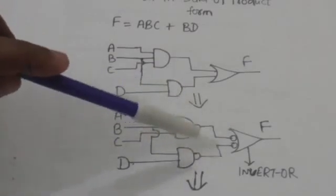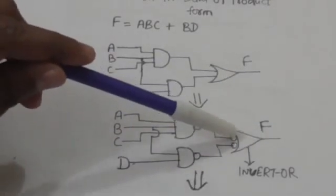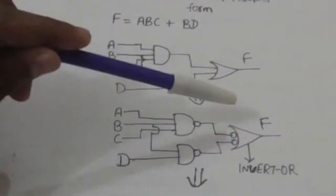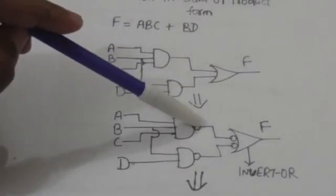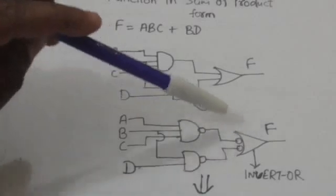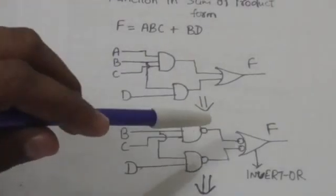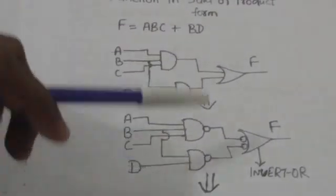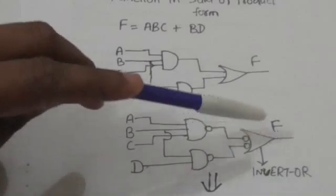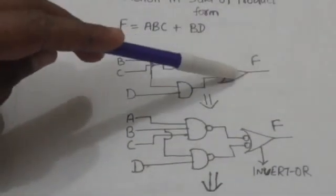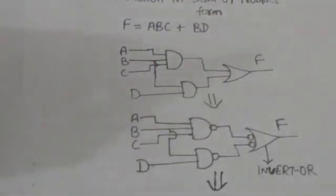Here I have put two small circles which perform the complement operation at the output of the NAND gates, and at the input of this OR gate I have again put two small circles. Since complement of complement restores the original value, it doesn't make any change. It means these two circuits are equivalent — the input which goes to this OR gate would be the same, because complement of complement will restore the value.